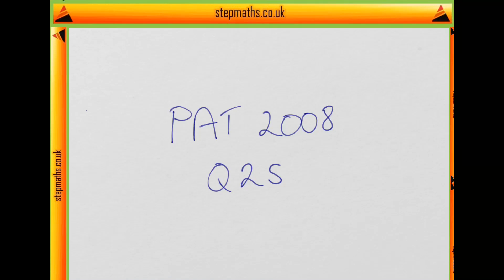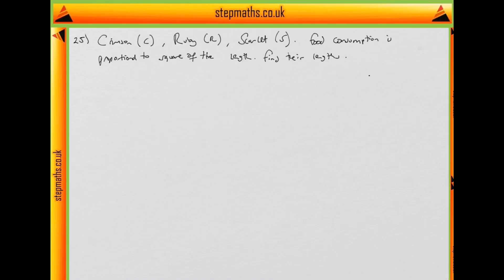Hi. So if you've got the Pat Penfield, there's Nate going with your question 25. So in question 25, we're told that a forest is inhabited by three species of macaw, which are all the same shape, but are different sizes and colours. We're told that the food consumption of each type of macaw is proportional to the square of its length.